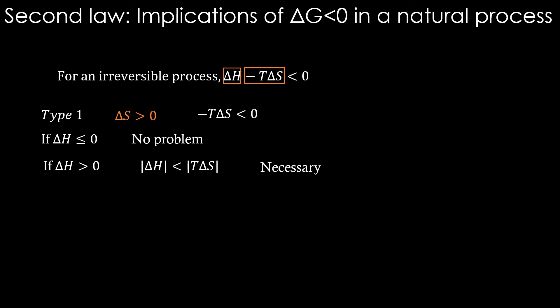In the second type of processes, the delta S is negative. Then minus T delta S is positive. Now in this case, delta H must be negative and its magnitude must be higher than that of the T delta S term. Only then delta G will be negative.